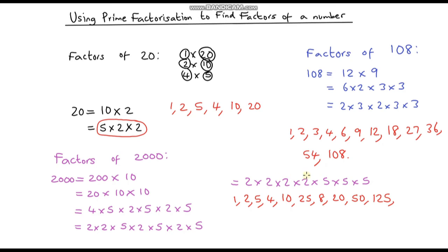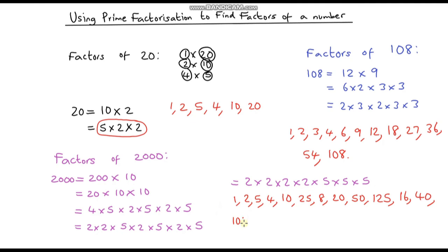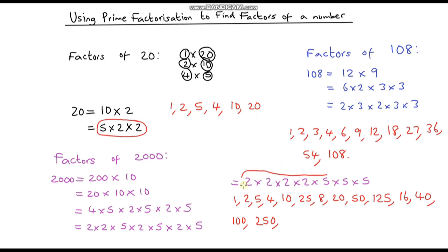Four-number combinations: 2 times 2 times 2 times 2 is 16. Three 2s and one 5: 2 times 2 times 2 times 5 is 40. Two 2s and two 5s: 2 times 2 times 5 times 5 is 100. Three 5s and one 2: 5 times 5 times 5 times 2 is 250. Five-number combinations: all four 2s and one 5 — 2 times 2 times 2 times 2 times 5 — is 80.